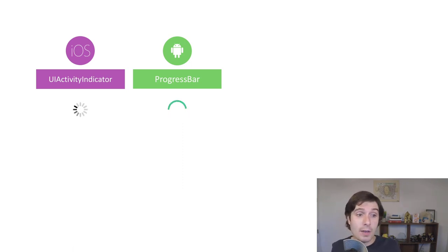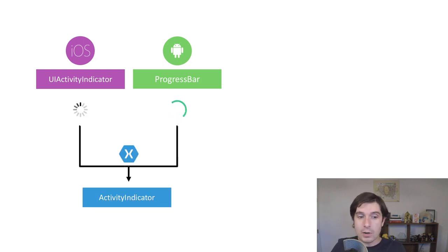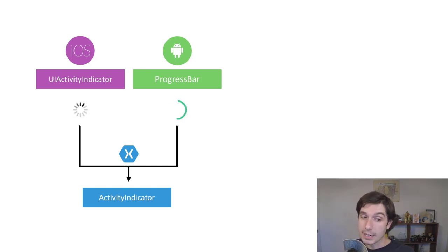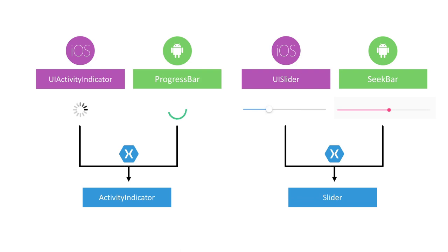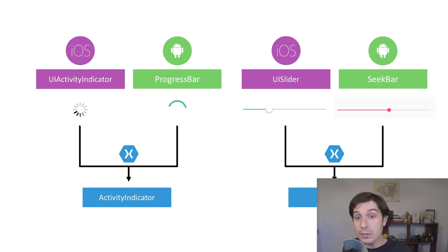For example, on iOS you have a UI activity indicator; on Android, a progress bar. Instead of making that twice, you create one cross-platform XAML user interface and get one API with Xamarin Forms called ActivityIndicator. For a slider, you have UISlider and SeekBar, but Xamarin Forms gives you that abstraction while still leveraging the native APIs. So even though you're creating a Xamarin Forms slider, what's displayed to your users is the native UISlider on iOS and the native SeekBar on Android — and of course for Mac and Windows as well.